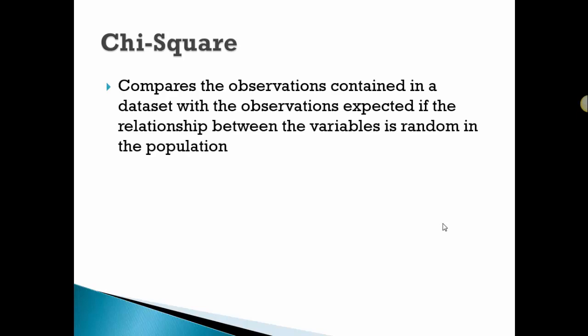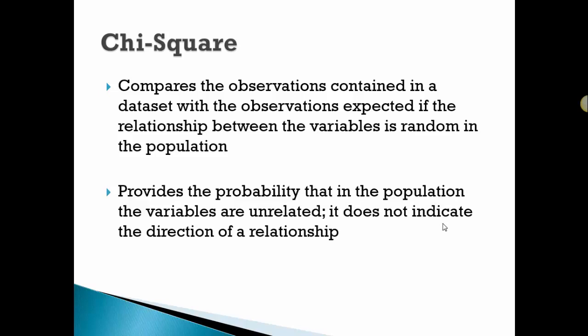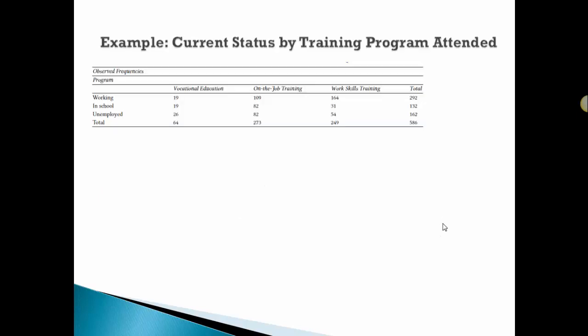This week we'll focus on the chi-square. This compares the observations contained in the data set with what we would expect to see if there was no relationship or there was a random relationship between the variables in the population. It provides the probability that in the population the variables are unrelated, but it doesn't indicate the direction of the relationship.